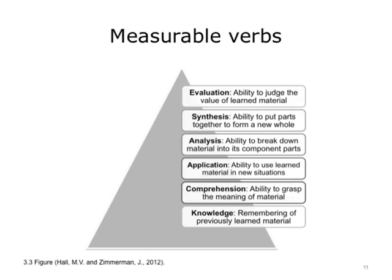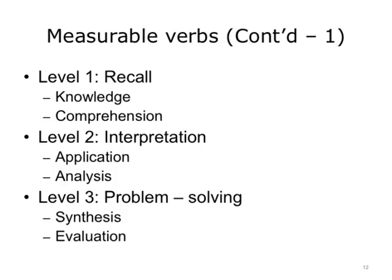To find measurable and observable verbs, we refer to learning taxonomies such as Bloom's. In the cognitive domain, Bloom's Taxonomy identified and defined levels of mental skills from the lowest level of simple recall of facts through increasingly more complex mental activities. There are six major categories. We can group the six levels of learning into three categories: Level 1 is Recall, involving recall or description of information; Level 2 is Interpretation, involving application and examination of knowledge; and Level 3 is Problem Solving, testing the highest level of learning and involving construction and assessment of knowledge.